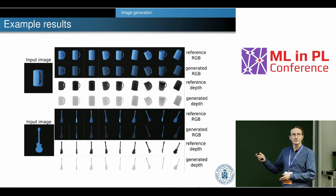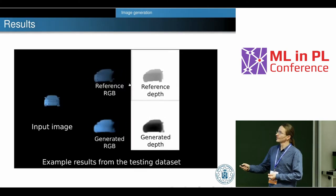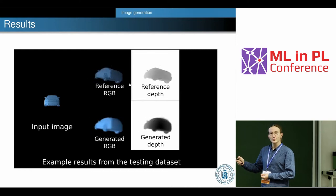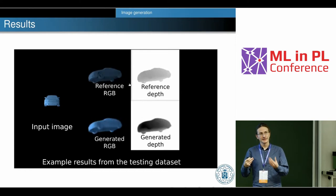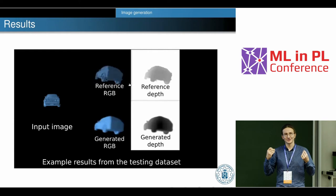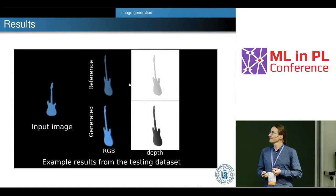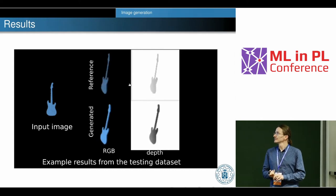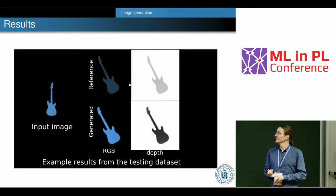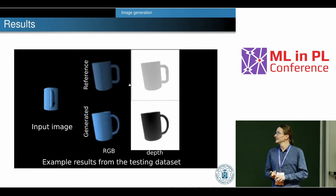Here we can see the reference RGB images — they are quite accurate. The same applies for depth images. For the mug and the guitar, from a single input image we can provide the reference angle for the camera and virtually rotate the object to generate images from that viewpoint. We tested this for various objects — cars, guitars, mugs — and we have 12 categories of objects in total.